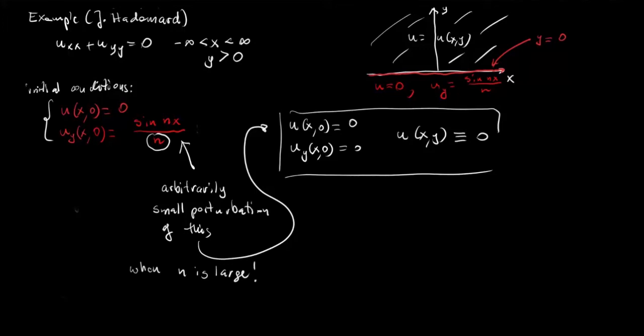But when one solves this equation with these initial conditions one finds that the following u is a solution. Note that here hyperbolic sine of ny stays. So I claim that this is a solution of the Laplace equation in the upper half plane and it satisfies these boundary conditions.